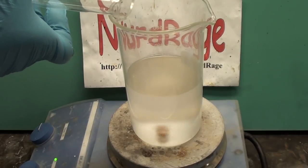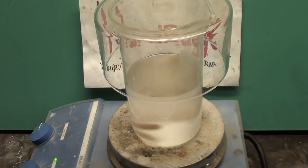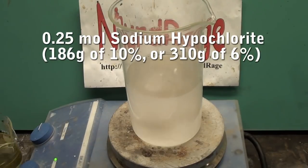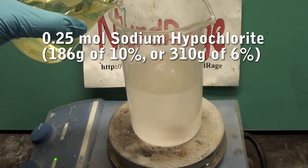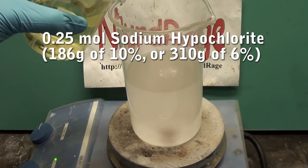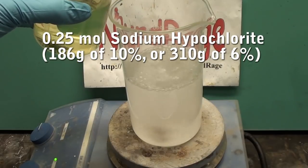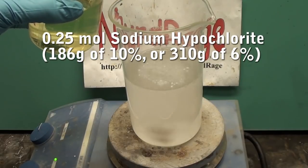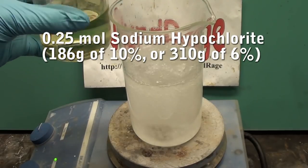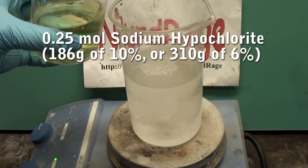Stir the ammonia and ketone vigorously for about 10 minutes to thoroughly mix them. Now while it's still stirring, add in a quarter mole equivalent of sodium hypochlorite solution, also known as chlorine bleach. I'm using a 10% solution so I'm adding in 186g. This reaction also works very well with 6% household bleach, but you'll need to use more, around 300g.